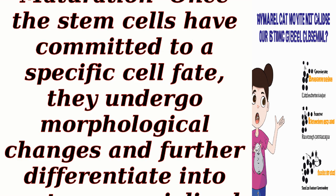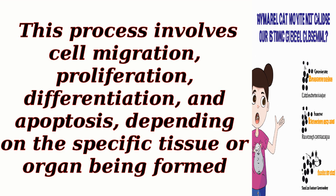Morphogenesis and maturation: Once the stem cells have committed to a specific cell fate, they undergo morphological changes and further differentiate into mature, specialized cell types. This process involves cell migration, proliferation, differentiation, and apoptosis, depending on the specific tissue or organ being formed.